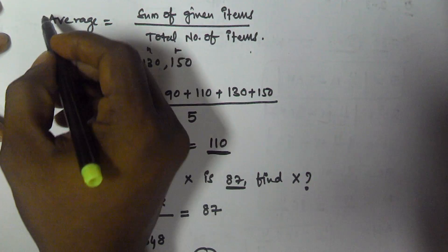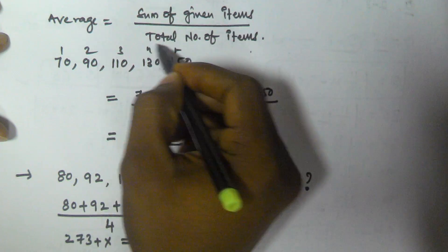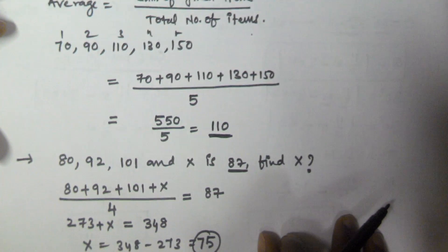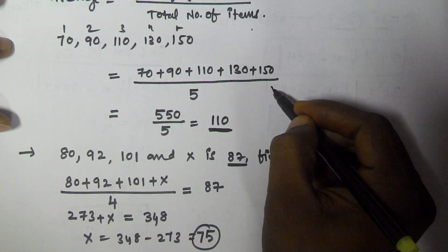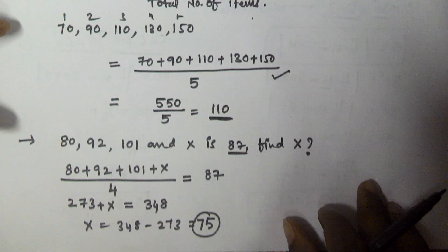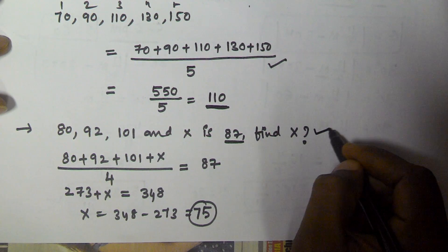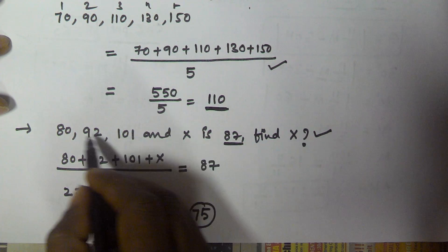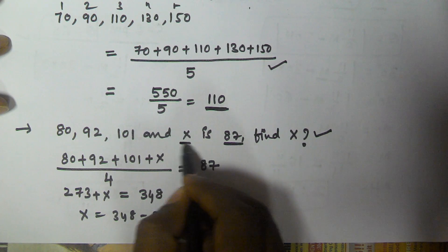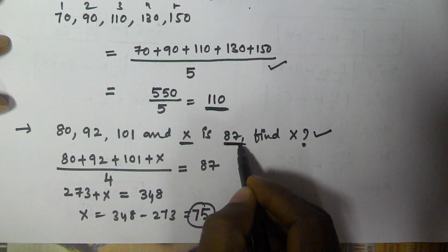So what is the formula for finding the average? Average equals the sum of given items divided by total number of items. Here we have seen finding the average of given numbers, and another example of averages.